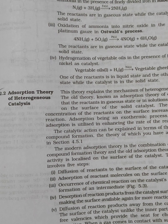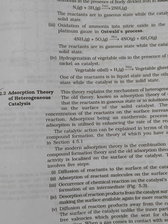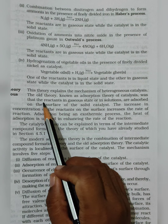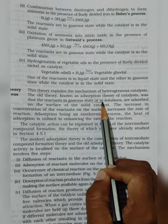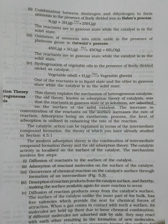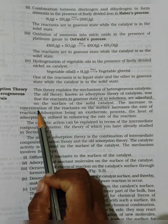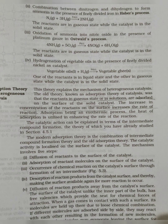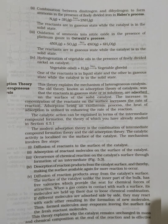Now let us see the adsorption theory of heterogeneous catalysis. Under this we will basically be studying about the mechanism of heterogeneous catalysis. There is an old theory associated with it known as the adsorption theory of catalysis, where the reactant in gaseous state or in solution is adsorbed on the surface of the solid catalyst. The surface is basically solid, and the reactant which comes and sits on the surface will be gas or in solution state. If the concentration of the reactant on the surface increases, the rate of the reaction will also increase.